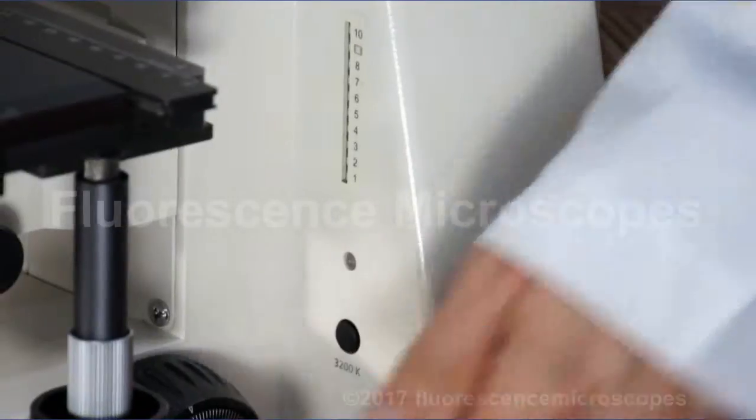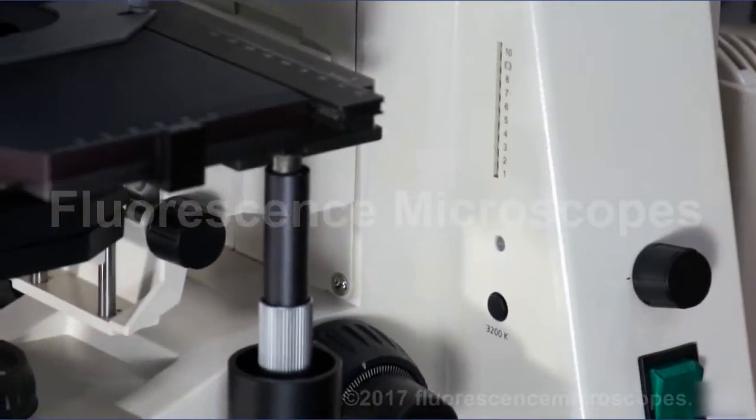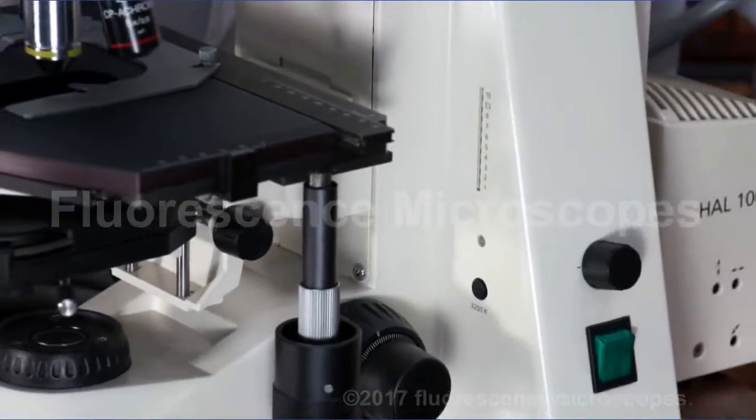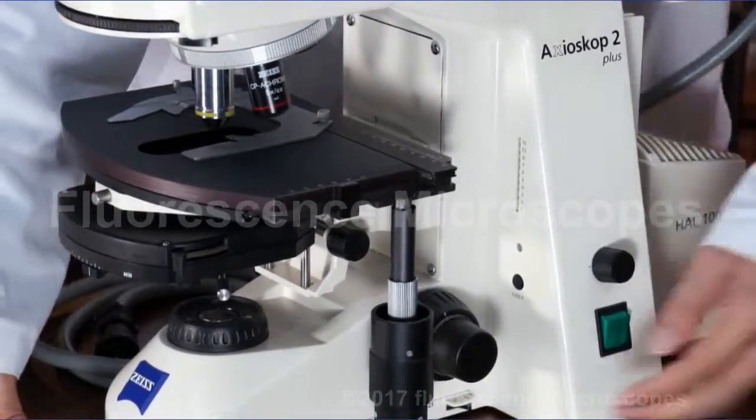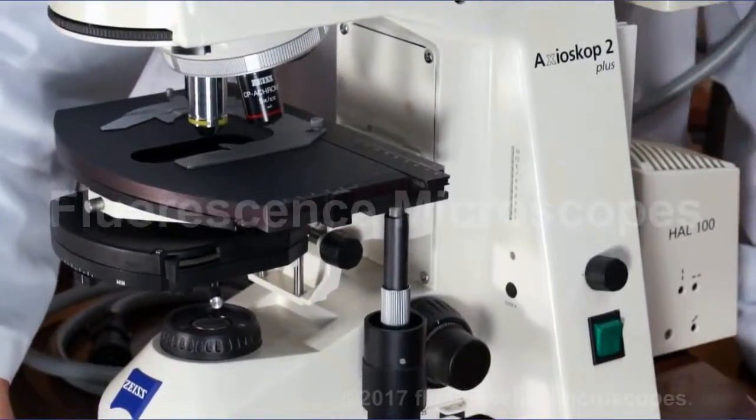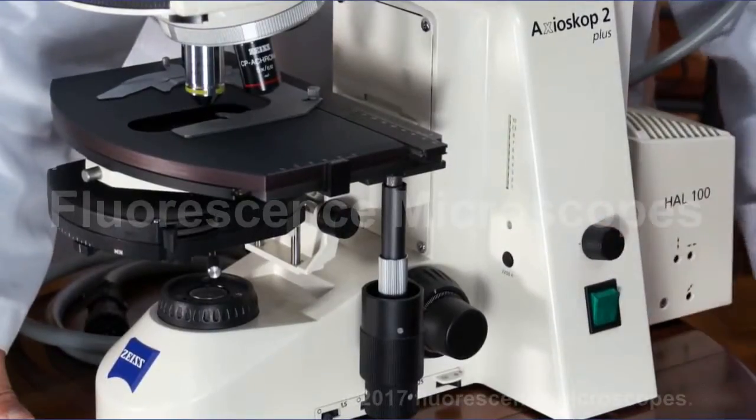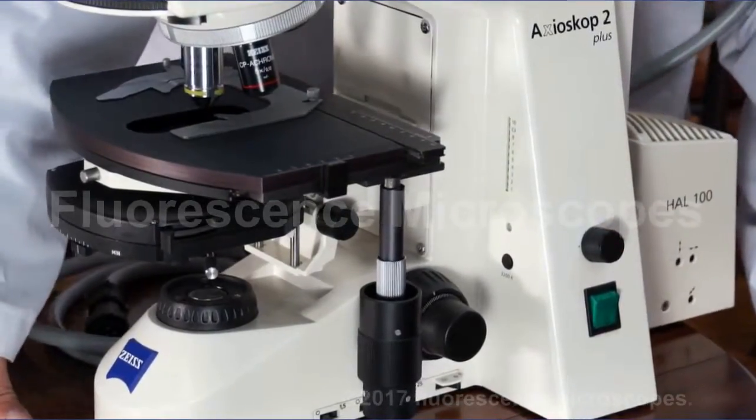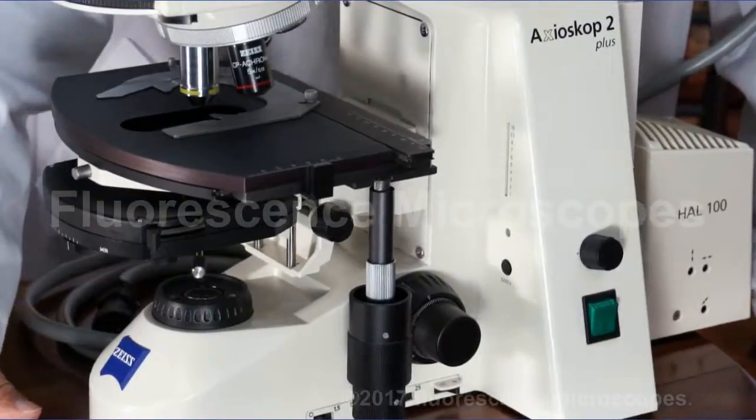And your neutral density filters, the reason for those is you may not want to change the color intensity of the light whenever you're looking at a specimen, but it may be way too bright for you. So that's why you use a neutral density. If you just change this light intensity, what it's doing is changing the voltage. And that voltage going higher or lower is also going to change the color temperature of your bulb.